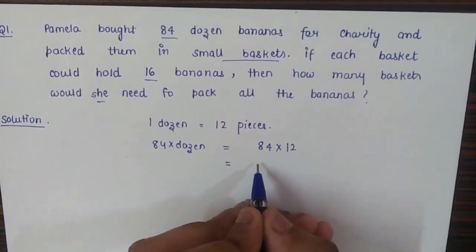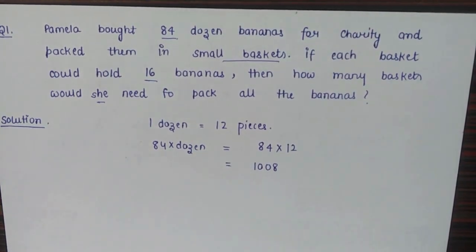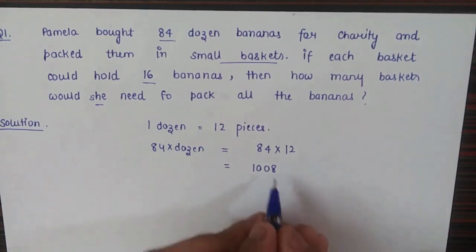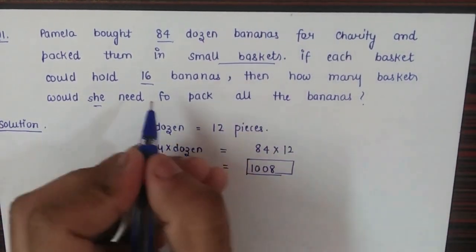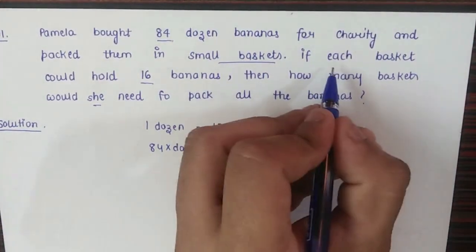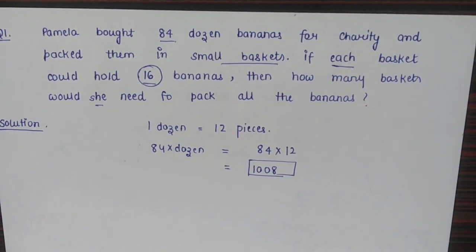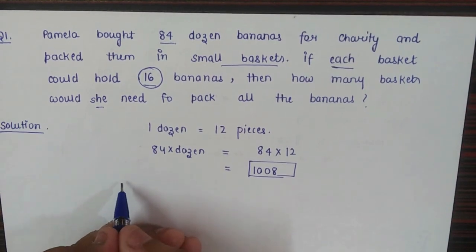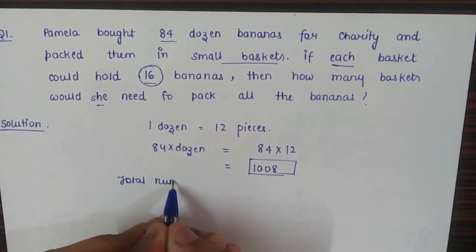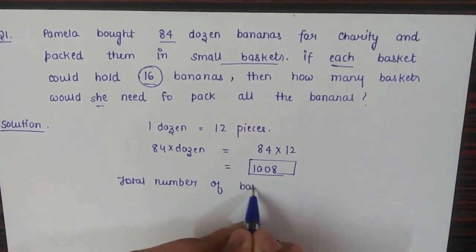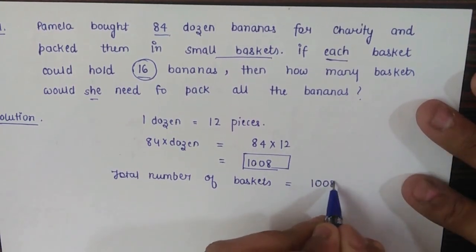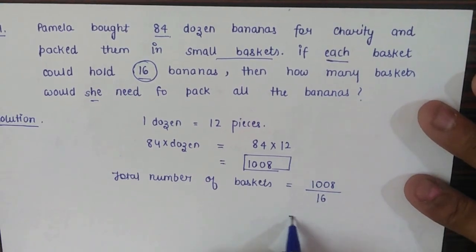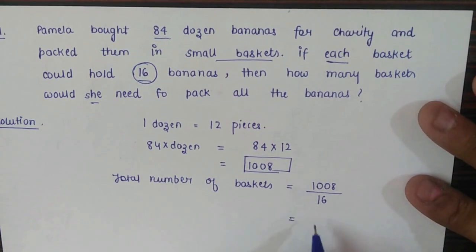84 times 12 equals 1008 pieces of bananas — that is the total number of bananas she brought. Now we need to divide: since each basket holds 16 bananas, the total number of baskets needed equals 1008 divided by 16, and the answer is 63 baskets.